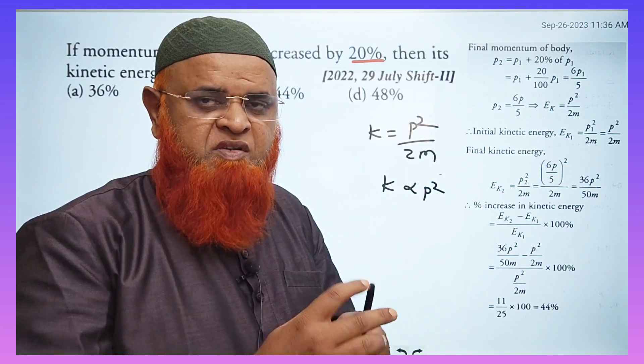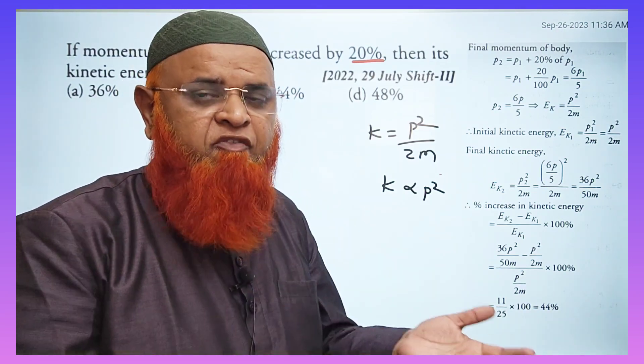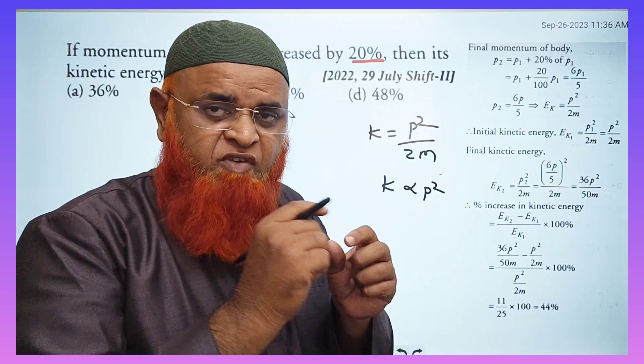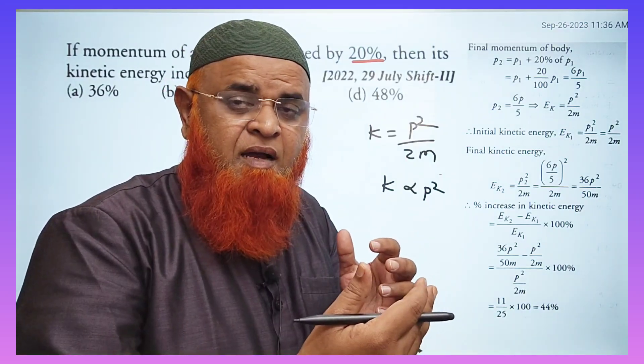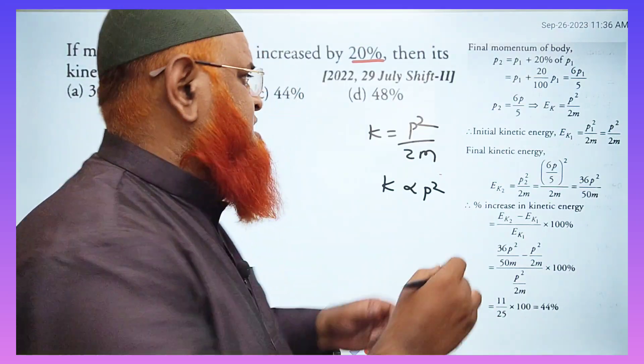So 120%, so 12, 12 squared is 144. So out of 144, how much is extra? Beyond 100%, 44% is extra.